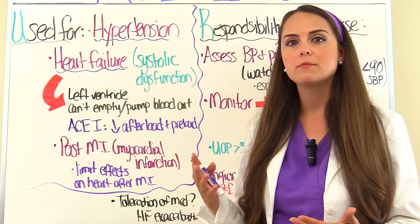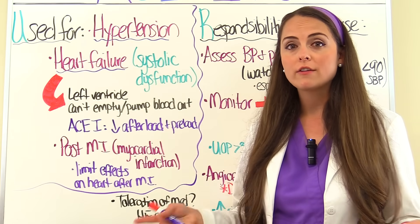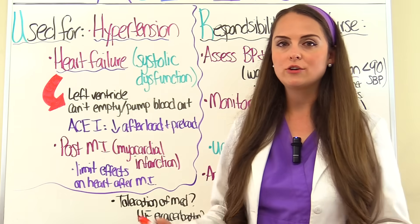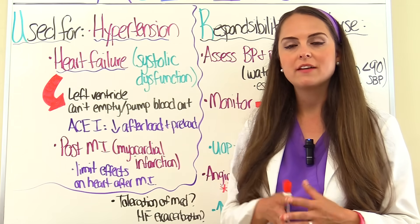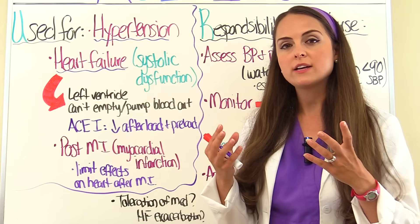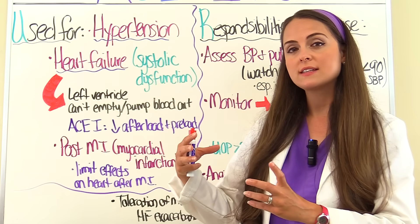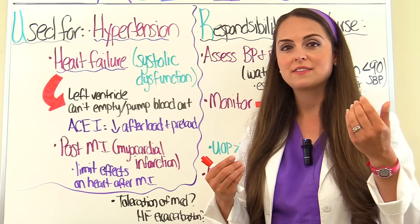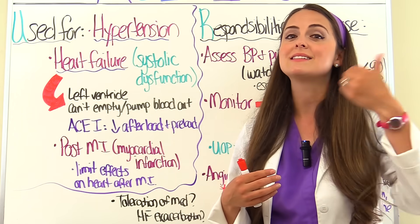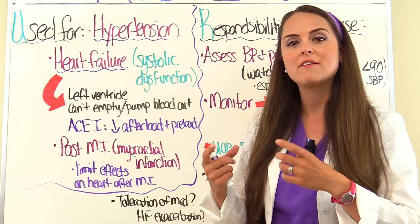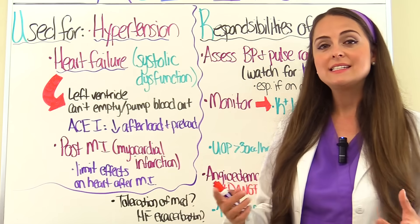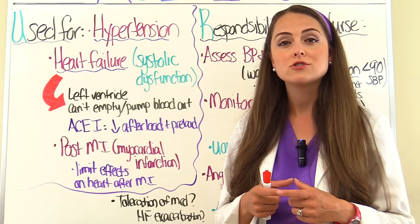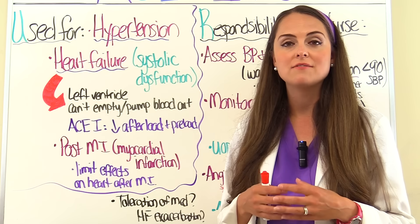ACE inhibitors help decrease afterload — the pressure the ventricle must overcome to open the semilunar valve and eject blood. By decreasing systemic vascular resistance, it's easier for the ventricle to pump blood forward. ACE inhibitors also help decrease preload, which is the amount the ventricle has stretched at the end of its filling phase — at the end of diastole.